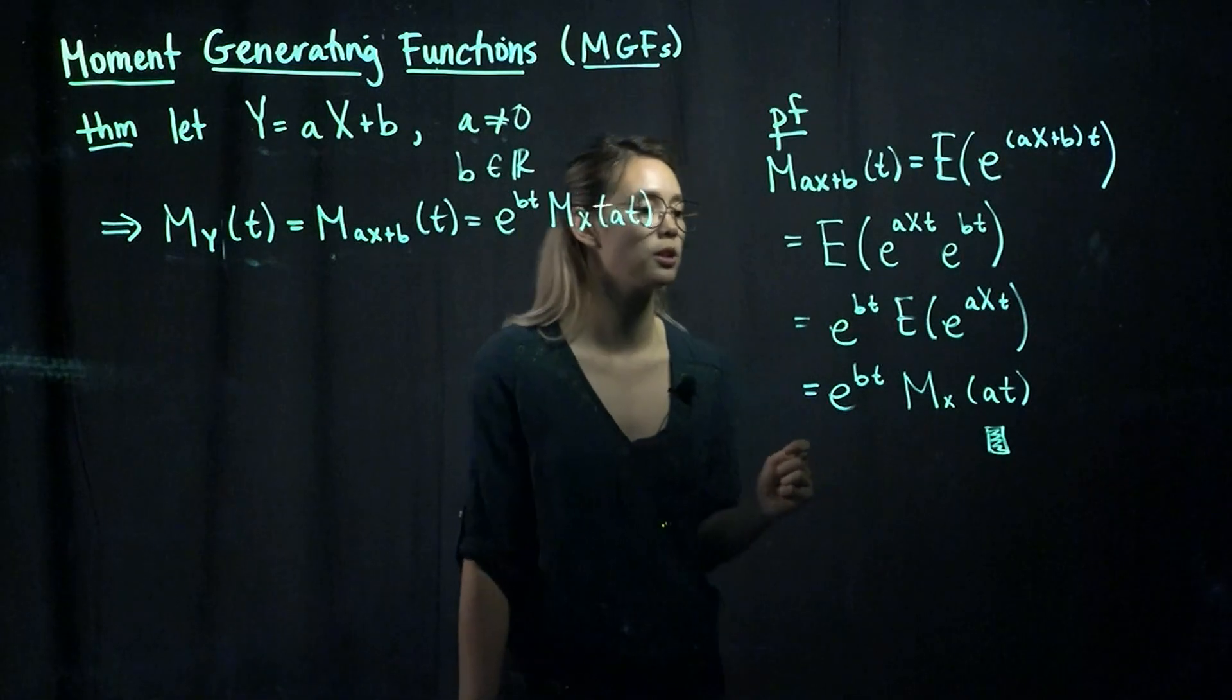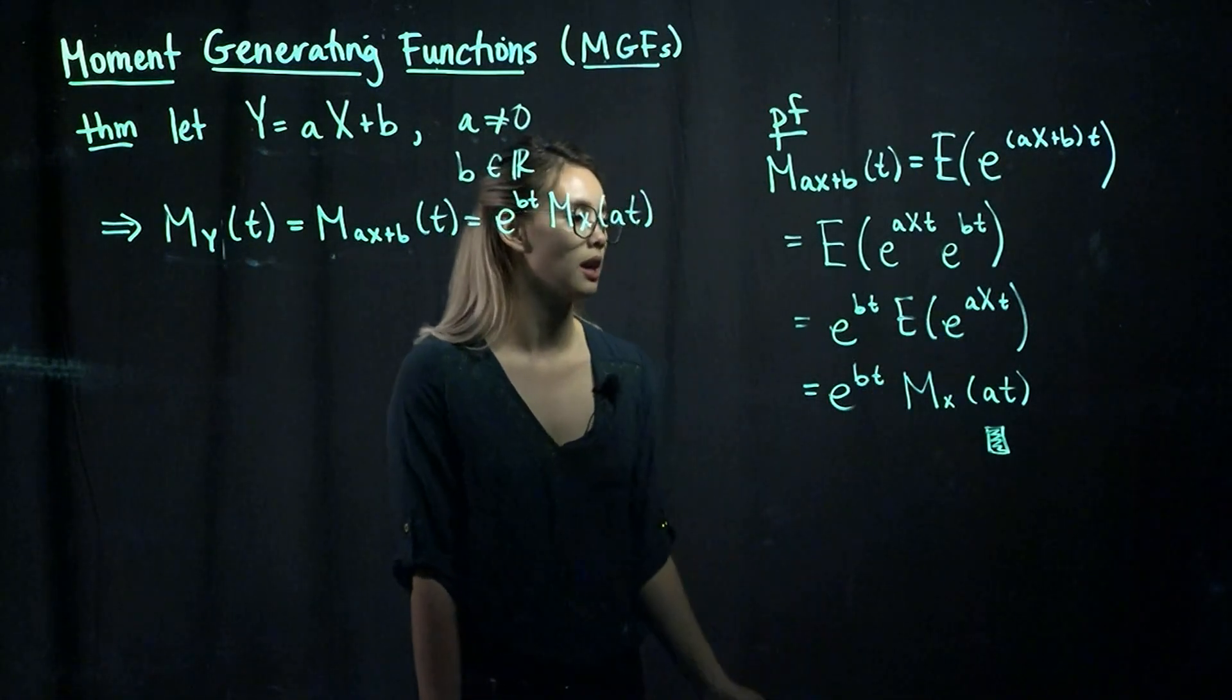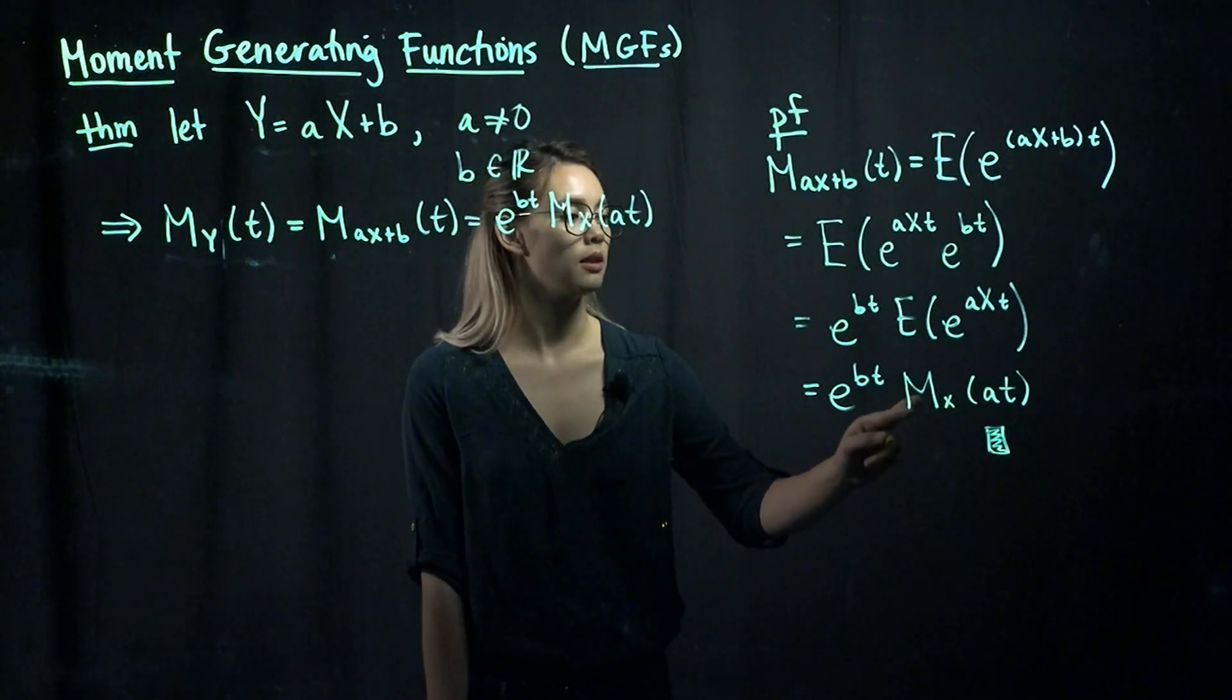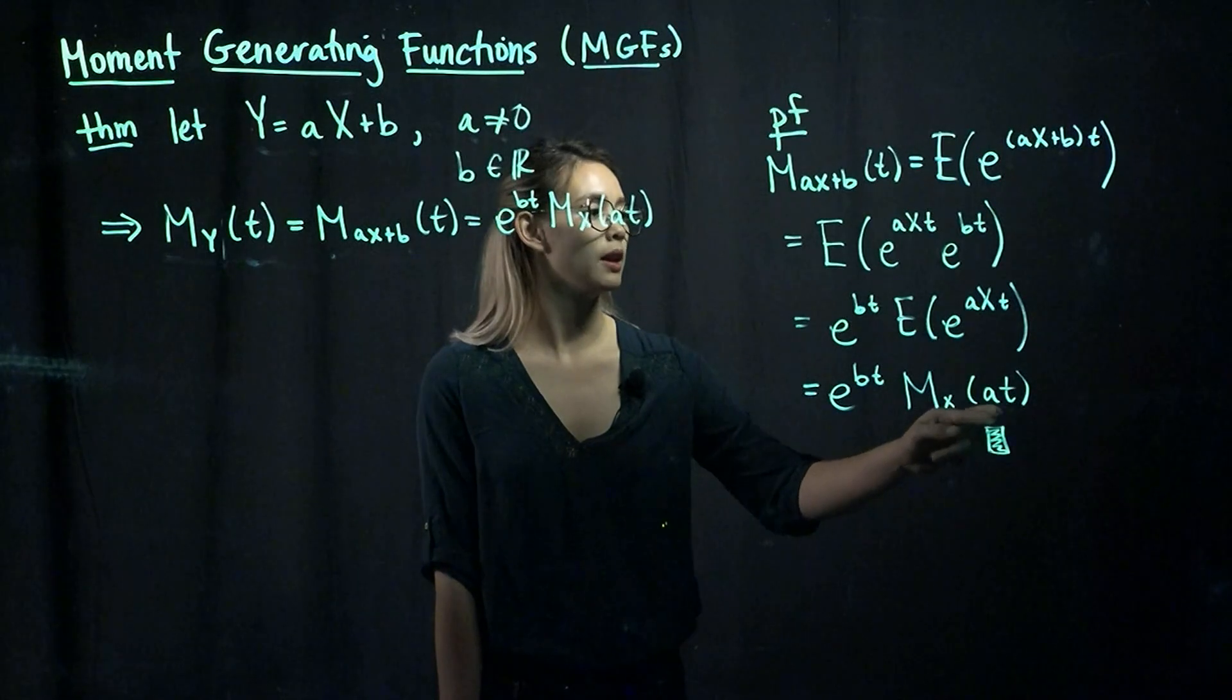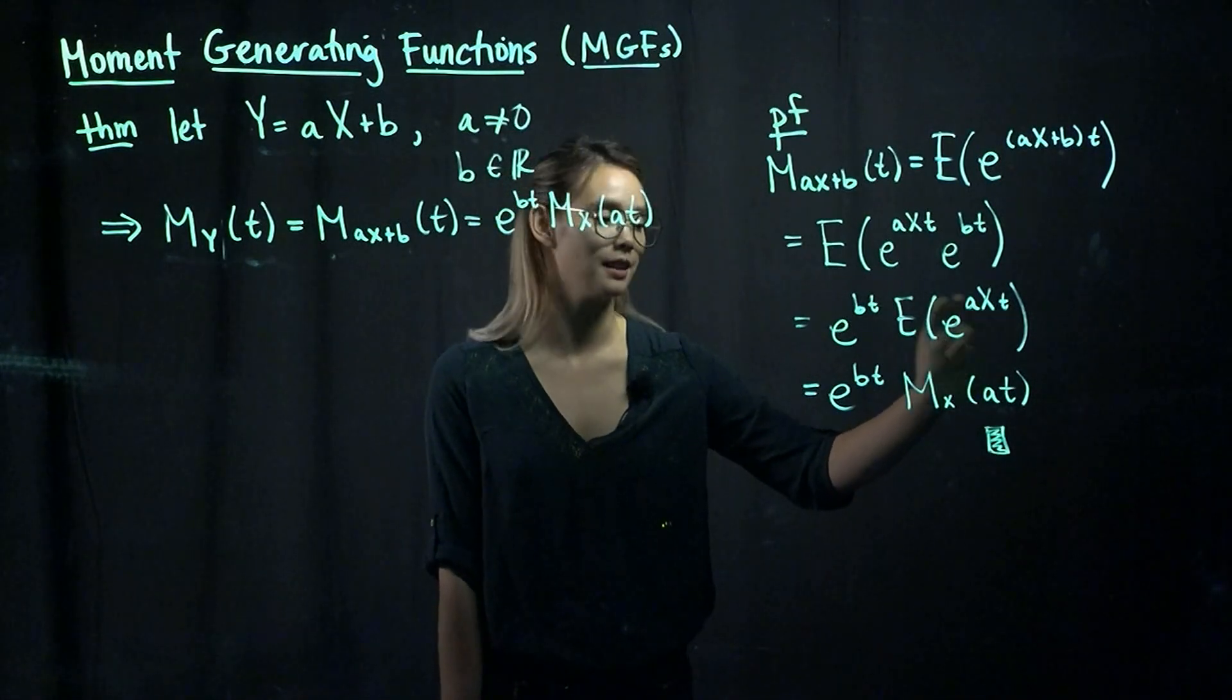We just pulled e to the bt out, and now we recognize this as the mgf. So we have e to the bt times the mgf for x, and then in here we have a times t, because we need to take into account that we have both a and t in there.